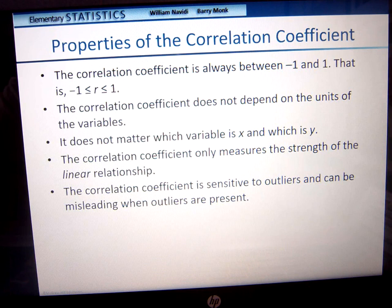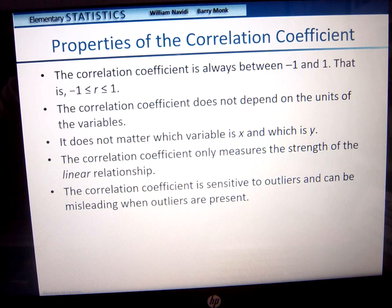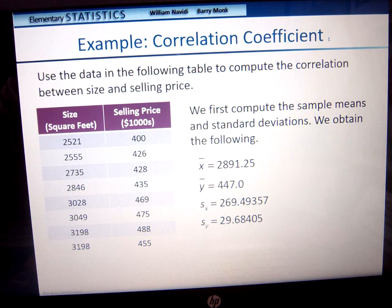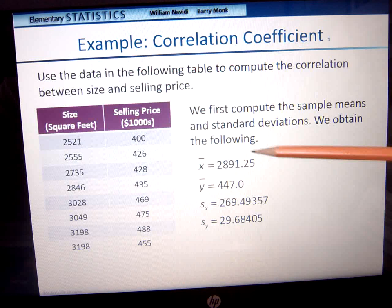The correlation coefficient only measures the strength of the linear relationship — how strongly the points are clustered to that line. The correlation coefficient is sensitive to outliers and can be misleading when outliers are present. That shouldn't surprise us because when we're finding the correlation coefficient, we're using the mean and the standard deviation, which are also sensitive to outliers. So here we use the data in the table to compute the correlation between the size and the selling price. First, we compute the sample means and the standard deviations.